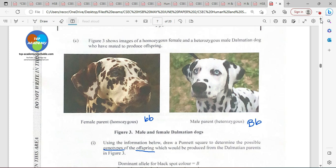This question was pretty interesting. I have never in over 20 years seen a colored picture on a CXC paper. It's a good look though. Figure three shows images of a homozygous female and a heterozygous male dalmatian dog who have mated to produce offspring. Forget about the male and female, it is not a sex link.